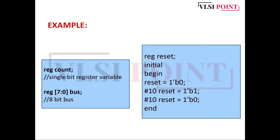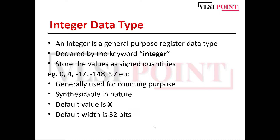Consider this example: reset is declared as a register data type. In the initial block, different values are assigned — initially the value is 0, then after 10 time units the value changes to 1, and after another 10 time units it changes back to 0. Since reg stores a value, reset holds 0 initially, changes to 1 at 10 time units, and holds that value until it receives 0 at the next 10 time units.